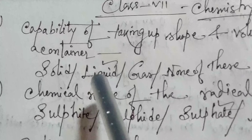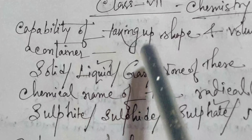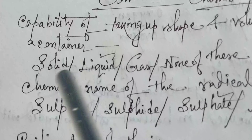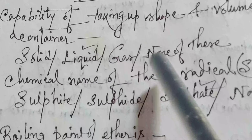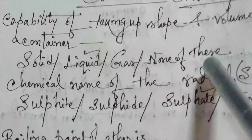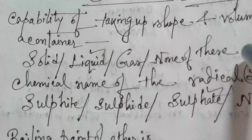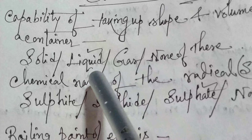Question: the capability of taking up the space and volume of a container — this property is basically found in solid, liquid, gas, or none of these. Which kind of state of matter? The answer is liquid.